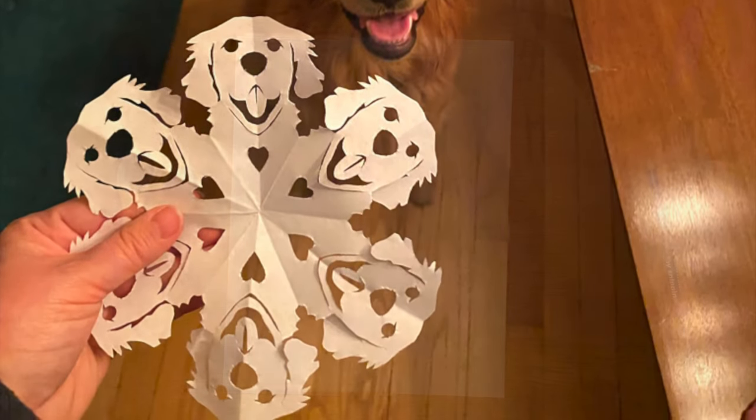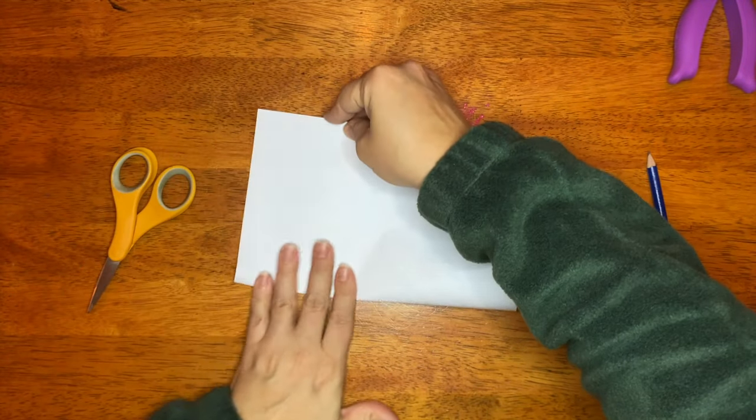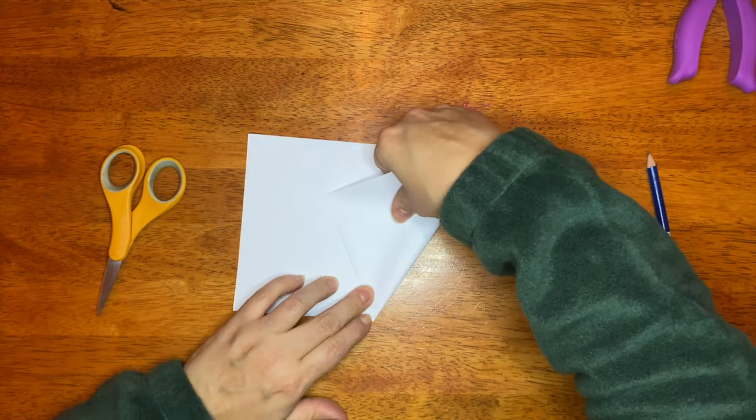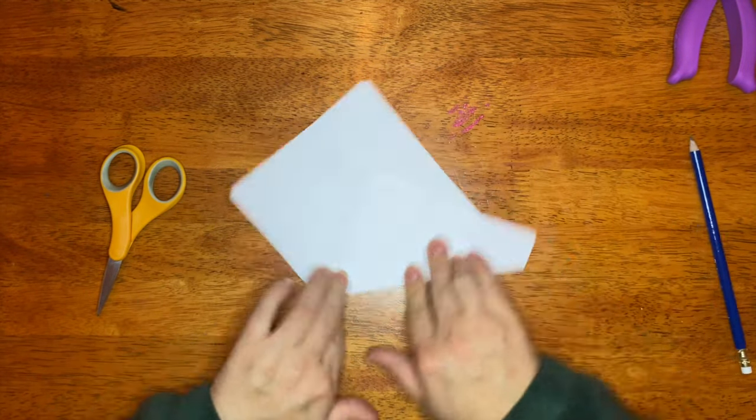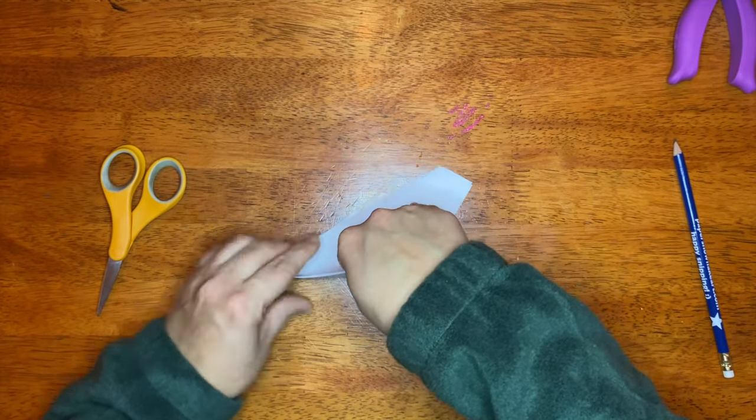So to start, you'll take your piece of paper, fold it in half, short end to short end, and I like to fold it in half again just to make a little notch to mark the center. Then you'll angle your sides up to make your pizza fold, and fold in half again.